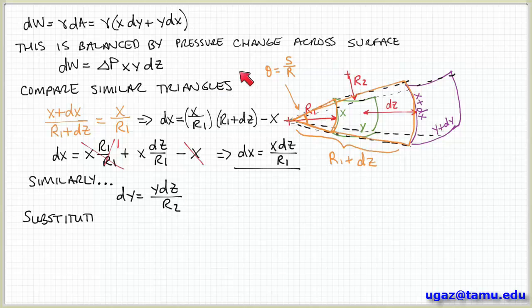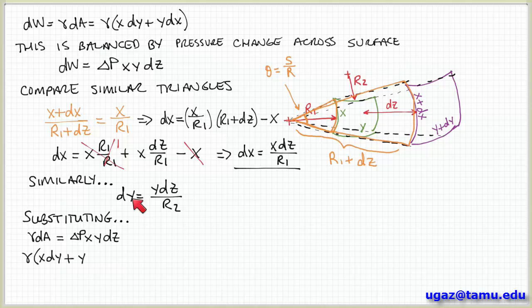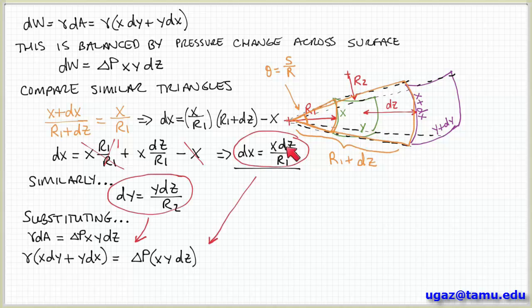So now I can return to the expression for the work in terms of the surface tension and the pressure times displacement. And I can now substitute in for the corresponding terms in the area. So the change in area we saw was x dy plus y dx. So then I can substitute in directly from the expressions that I found from geometry that express dy and dx in terms of dz. And so then this will allow me to simplify this equation further.